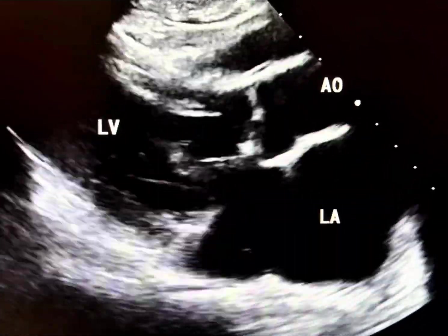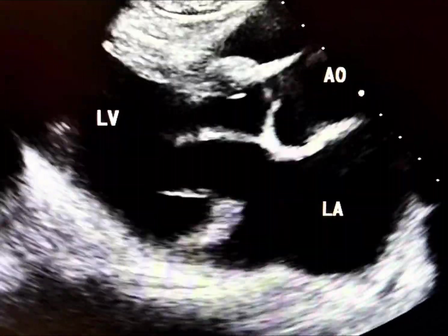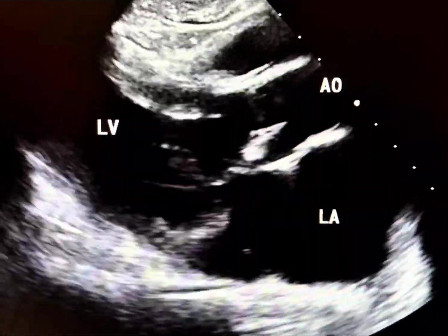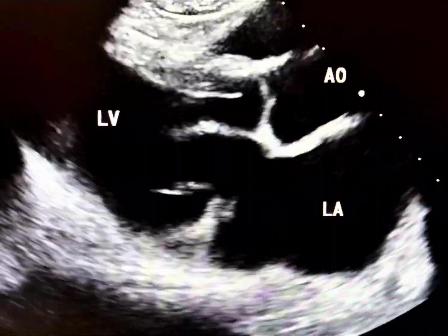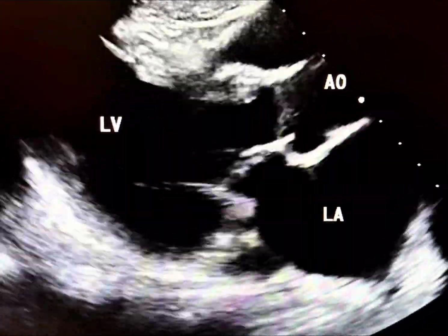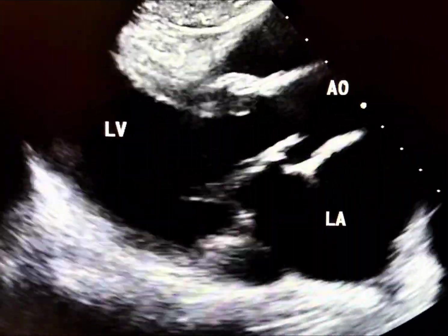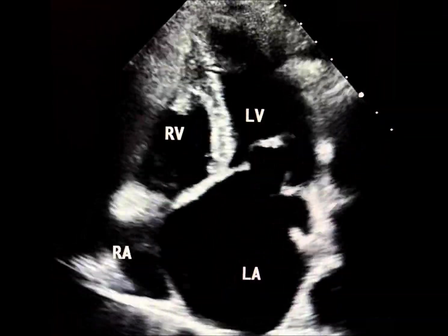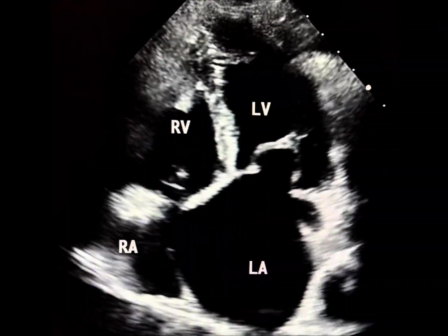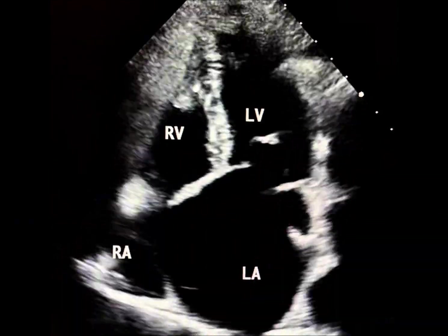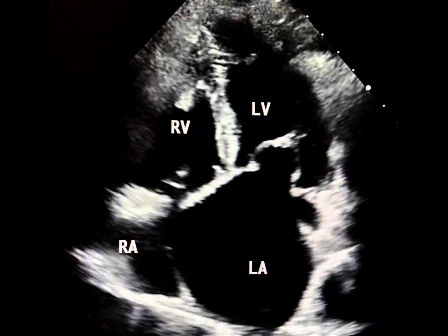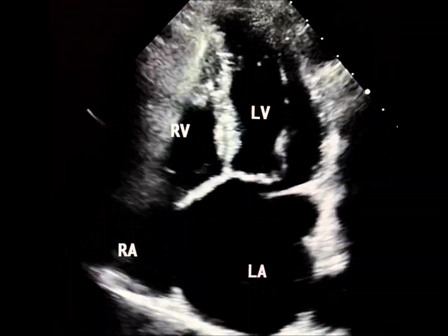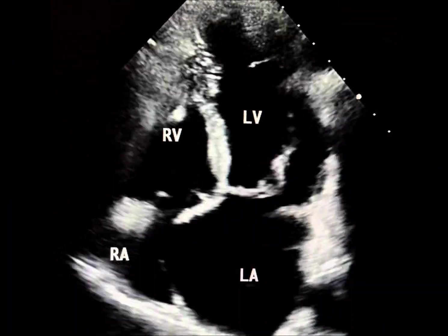If parachute mitral valve is mistaken for rheumatic mitral valve disease, significant complications may arise during balloon mitral valvuloplasty, such as acute severe mitral regurgitation. Additionally, performing surgery without recognizing the parachute valve as a complex pathology could lead to prolonged surgery, improper prosthetic sizing, and chordal mismanagement.